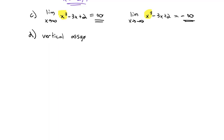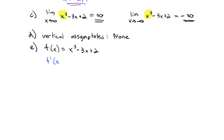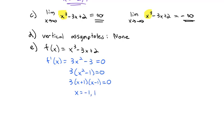Vertical asymptotes come from when the denominator equals 0, but we have no fraction here, so there are none — with fractions you'll have to be careful. For part e, the first derivative test to find critical points and where it's increasing or decreasing: f(x) = x³ - 3x + 2, so f'(x) = 3x² - 3. Set equal to 0, factor out 3: (x + 1)(x - 1) = 0. Our critical points are x = -1 and x = 1.